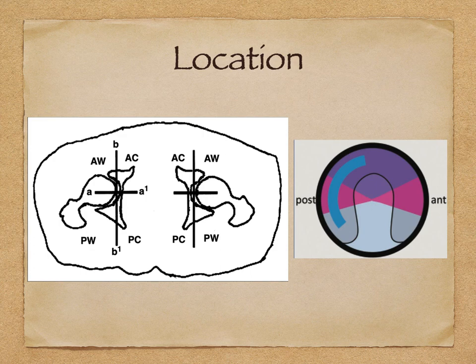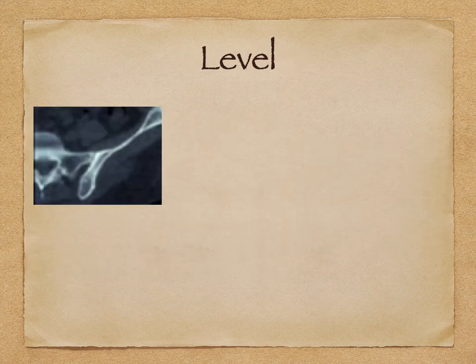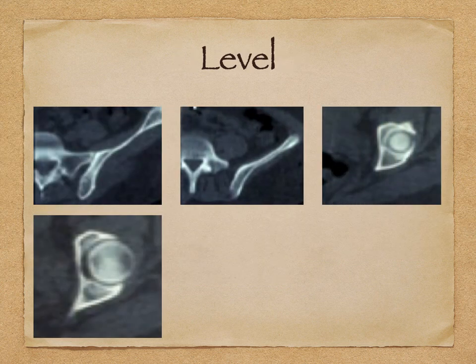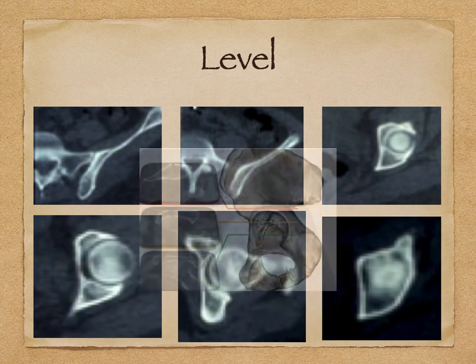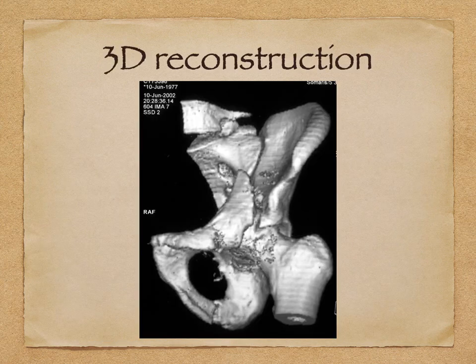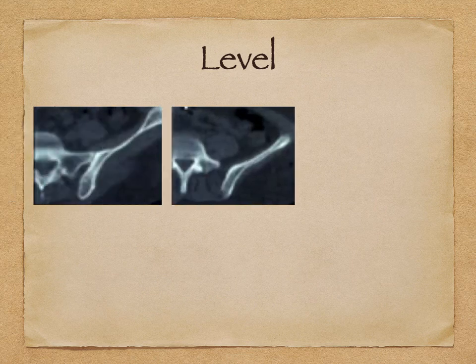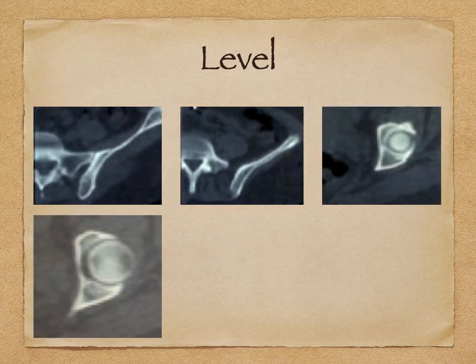Not all fractures will be simplified, but this gives you an idea. If things are lateral, think more in terms of wall; more medial, think in terms of column; anterior is anterior and posterior is posterior. Regarding levels, at different sections you must identify how the shape varies in the acetabulum, and then that can help distinguish where the fracture lines are.